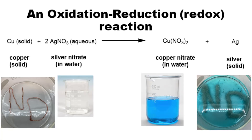This reaction features silver and copper, which both really like to do redox reactions. We're going to start with a copper wire and a solution of a compound called silver nitrate dissolved in water. The silver in the solution will take one electron from copper, reducing the silver into its solid state. Then the copper is going to give up two electrons to fully oxidize, so it takes two atoms of silver to oxidize one atom of copper fully.